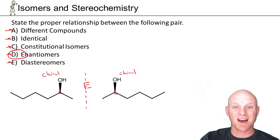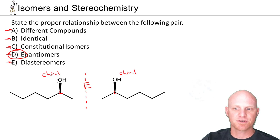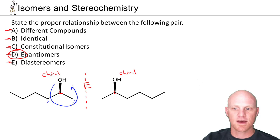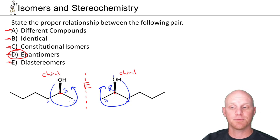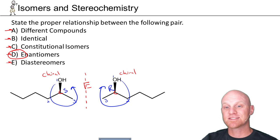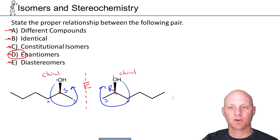We could also assign R and S and figure out they're in opposite configurations. Going through the priorities one, two, three — this one is in the S configuration. The other one, going one, two, three, with the hydrogen as lowest priority on the dash in both cases, is in the R configuration. Their bond connectivity is the same but they're not identical — having opposite configurations, they are enantiomers.